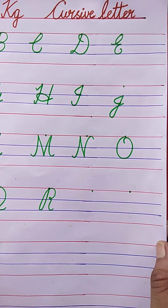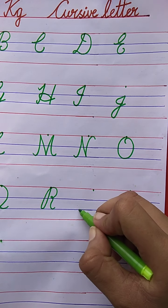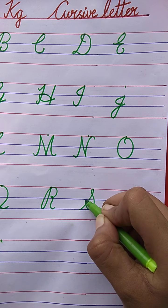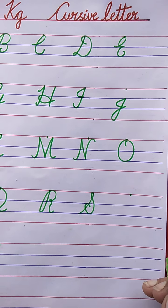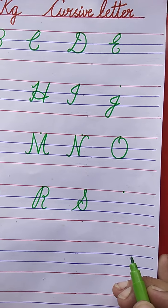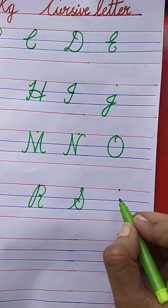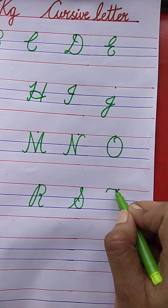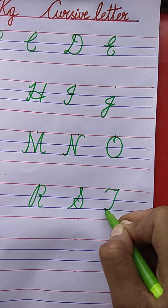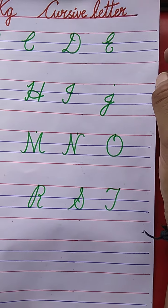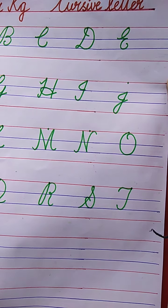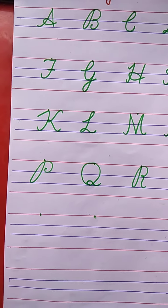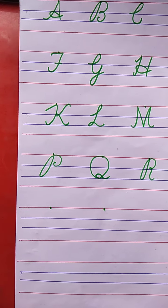Now tell me the next letter. S. See here — slanting line, loop, semi-circle, curve. S for Sailor. The spelling of Sailor: S-A-I-L-O-R. Now tell me the next letter. T. Curve line, slanting line, curve. T for Tap. The spelling of Tap: T-A-P.